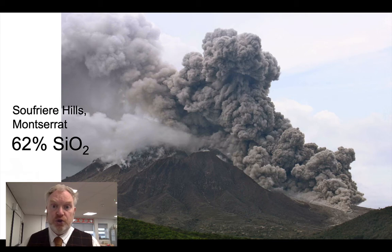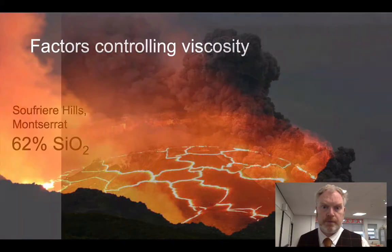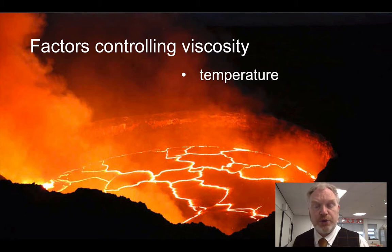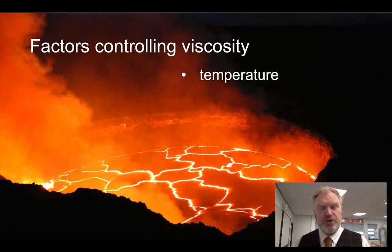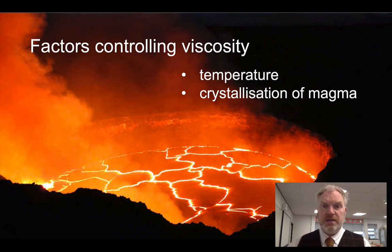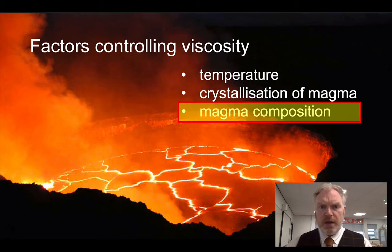Let's think about what factors control viscosity. One factor is temperature — the higher the temperature, the lower the viscosity. As we'll see when we look at plate tectonics, temperature is also related to the composition of the material. With temperature, we also need to consider to what extent the magma is already crystallized — the greater the proportion of crystals within the magma, the more viscous it will be. But as we've already seen, perhaps the most important factor is magma composition.